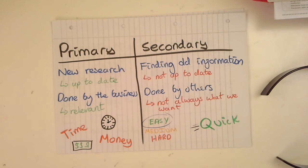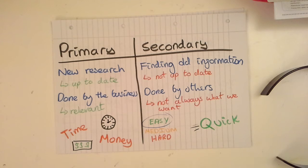Because we're doing the research ourselves — though we could pay someone else to do it for us and it's still technically primary research — either way it's going to cost us money and take time. And the better the research you want, the more it's going to cost.